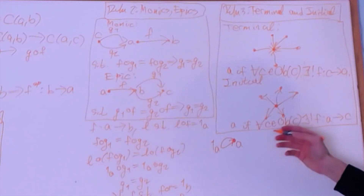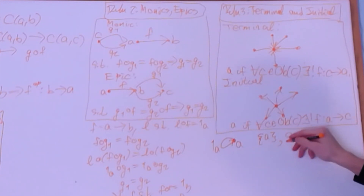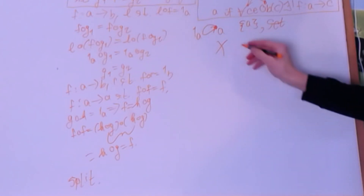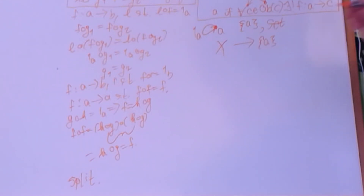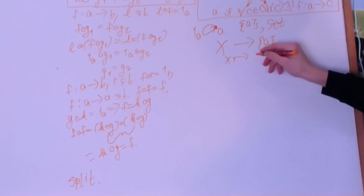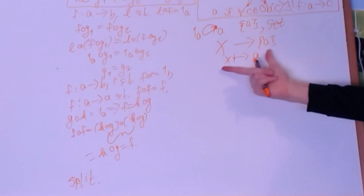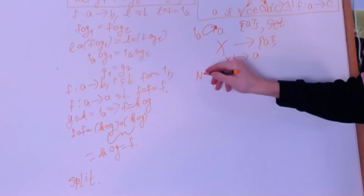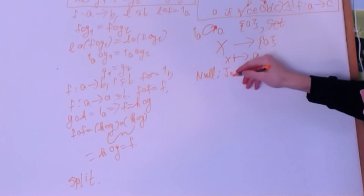An example of a terminal object is a one-point set in the category of sets. If we have some set X and direct it to the one-point set, there is only one function from X to the one-point set — it sends every element of X to that single point. So every object of the category has a unique arrow funneling into it, which is exactly the definition of terminal.